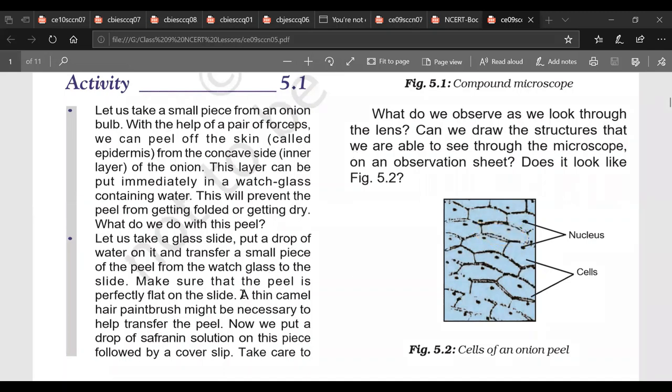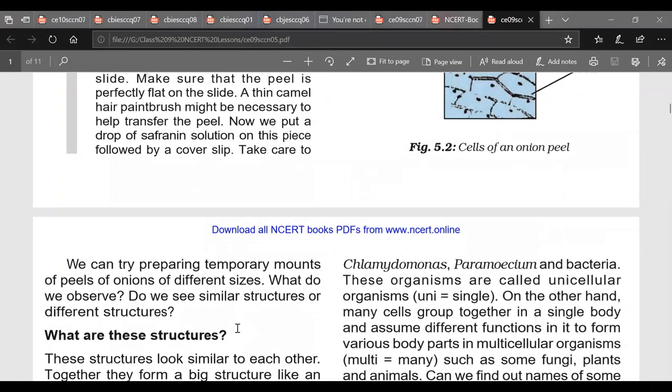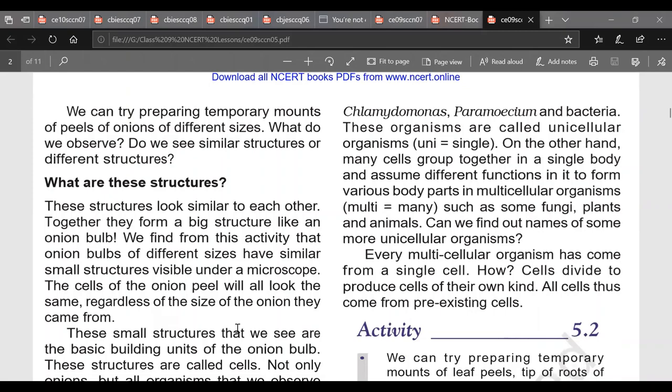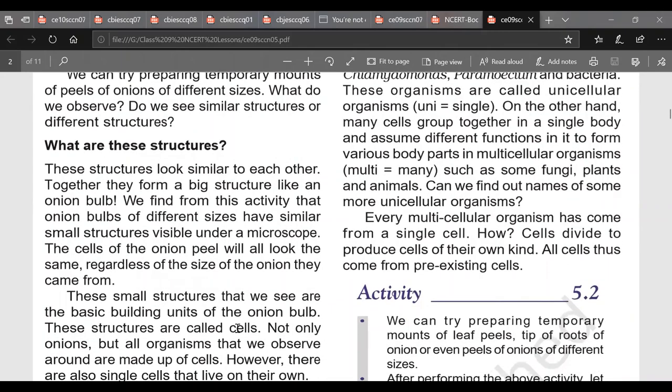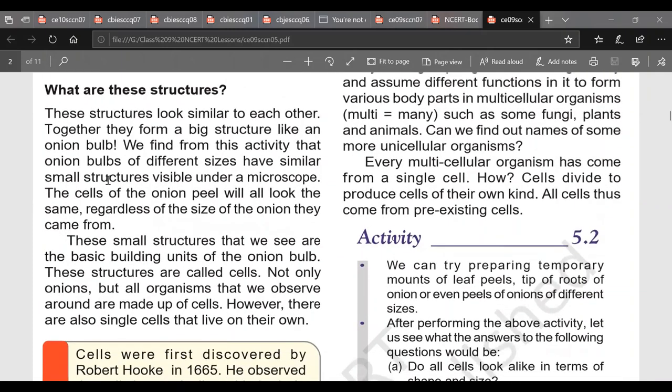Now we proceed to next part of it. And one thing to be noticed is all cells are alike. So this was making or preparing temporary mount of onion peel. So he says what are these structures? The structures that we saw are the cells. And this paragraph will make you clear that onion bulb may be of different sizes, may be small, may be big, but all cells are of same size. Only difference will be bigger onion bulbs will have more number of cells and small onion bulbs will have less number of cells.